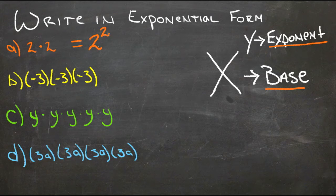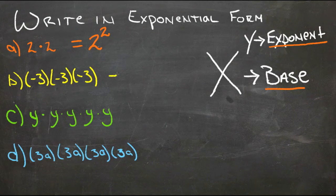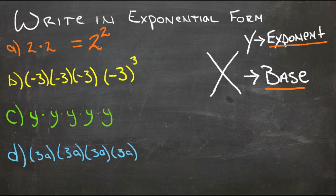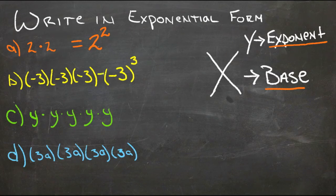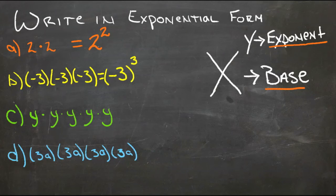Our base is 2 — it's the number being multiplied — and our exponent is 2 because it's the number of times it's being multiplied. For our second example, the base is negative 3 and the exponent is 3 because that's the number of times it's being multiplied. This isn't negative 3 times 3; this is negative 3, multiplied 3 times.